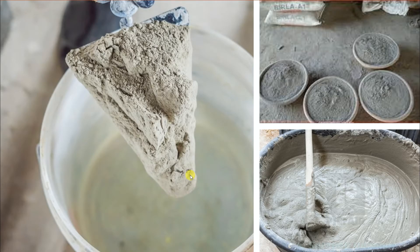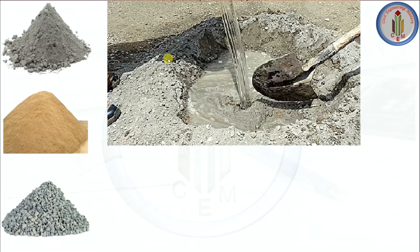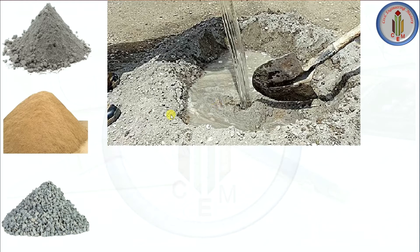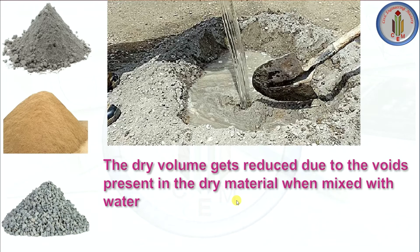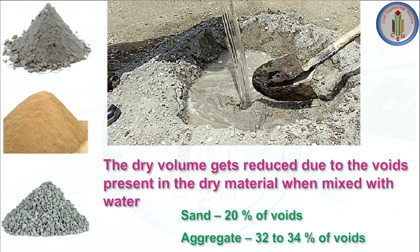For example, you can do a simple experiment — take a little cement and mix it with water. The dry volume gets reduced when it becomes a wet volume. Here you can see all the materials — cement, sand and aggregate together. When we mix with water, the dry volume gets reduced due to the presence of voids in the dry material. The dry volume gets reduced because the voids present in the dry material lose their friction when mixed with water.